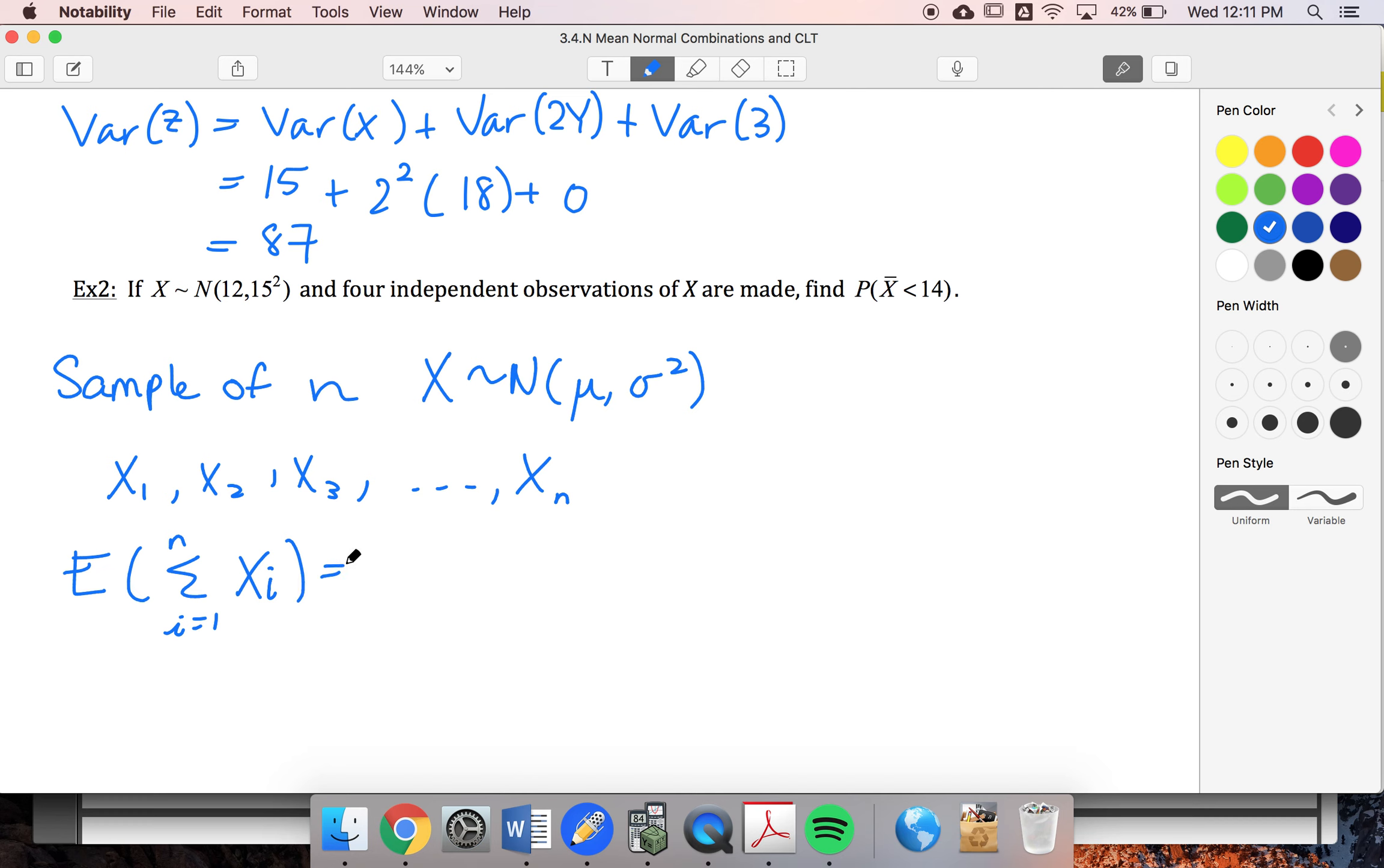So I'm going to end up with n of my means, because my linear combination, I'll just add up all of the means, but they're all the same. So I get n times the mean.